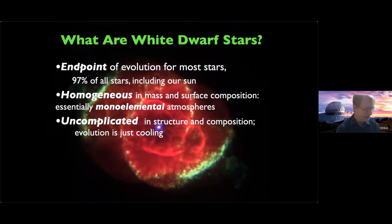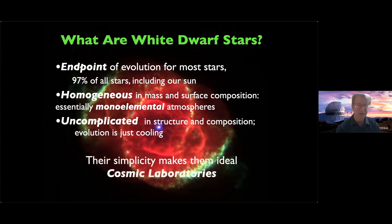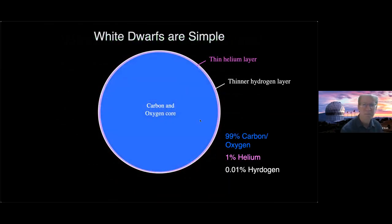White dwarfs are the endpoint of 97 percent of all stars. The reason many of us like them is that they are simpler to model than other physical systems. When you can build a model that's not too complicated, you have confidence the results may match reality, and you can make small additions and measure various effects. They're uncomplicated in structure and composition and make ideal cosmic laboratories — white dwarf stars are excellent for getting a handle on physics that are difficult to achieve on Earth.